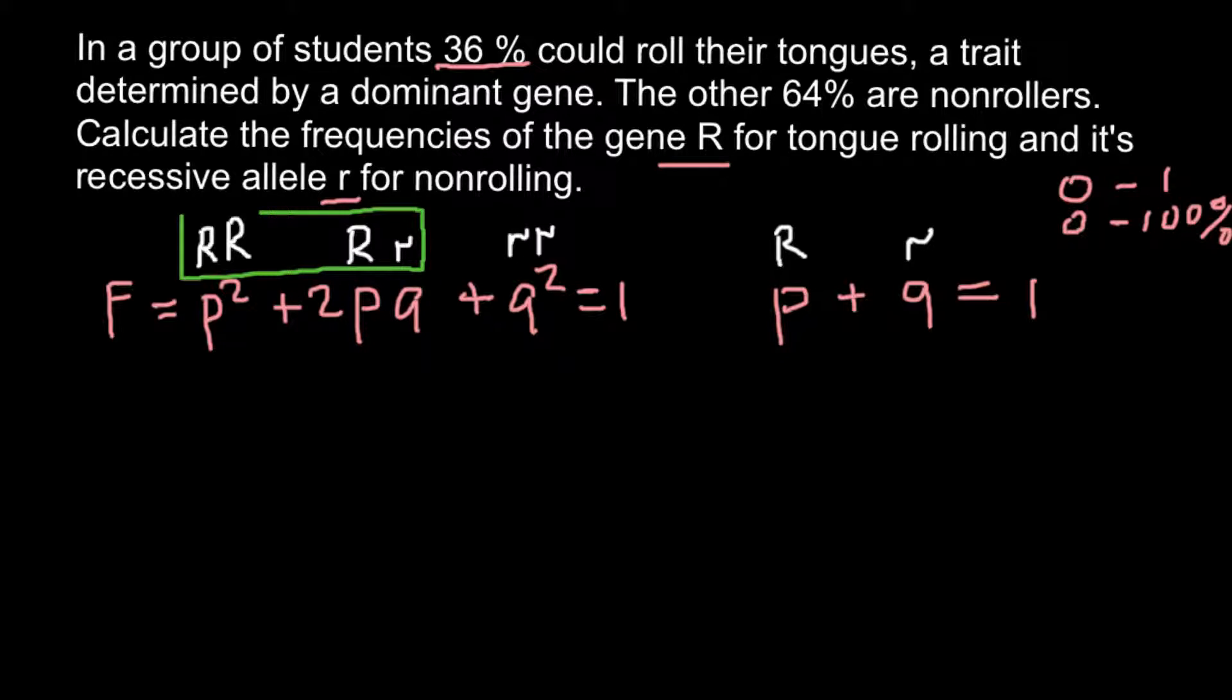Both homozygous dominant and heterozygous genotypes would make 36%. Genotypes that are small r small r would make a recessive phenotype and equal another 64%.